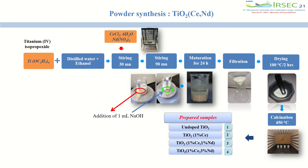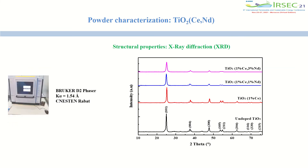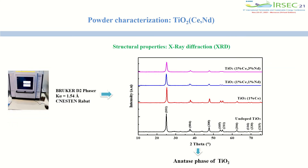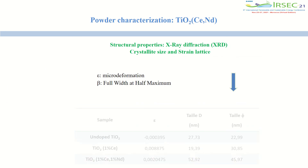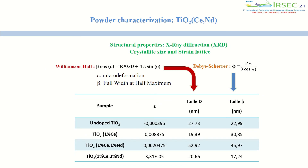The obtained powders are calcined at 450 degrees and characterized by different techniques. For the structural properties, X-ray diffraction was performed. It confirms the formation of all samples in the anatase phase of Titanium Dioxide. Also, the crystalline size was calculated using both the Williamson-Hall and Scherrer formulas, showing that they are in the nanoscale range.